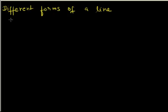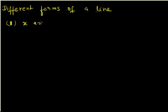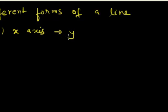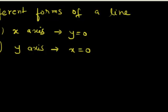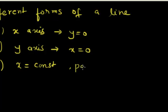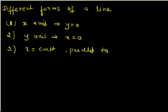In the previous videos you must have seen that the different forms of a line are: first is the x-axis, the equation of x-axis is given by y equals 0. The second form is the y-axis, the equation for y-axis is given by x equals 0. The equation of any line where x is a constant is always a line which is parallel to y-axis.